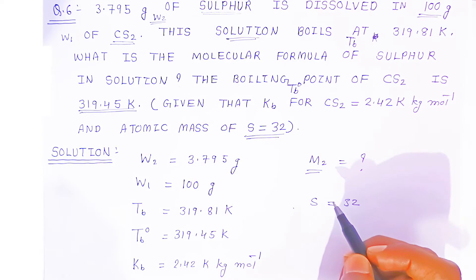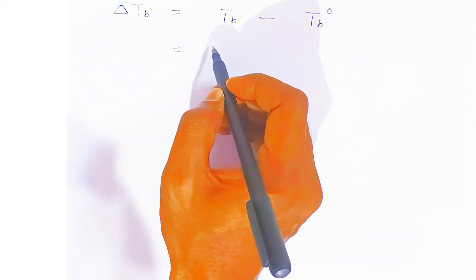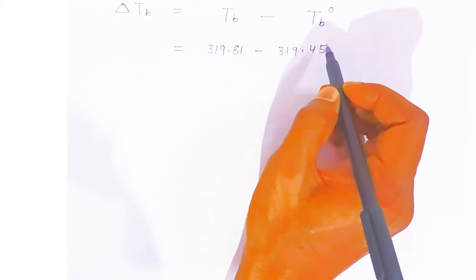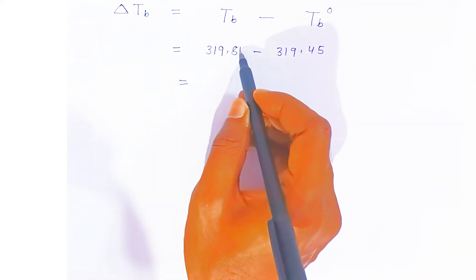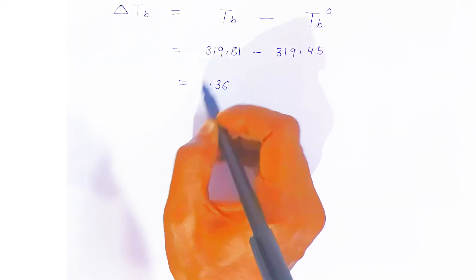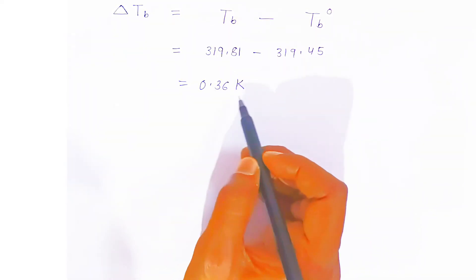To calculate the molar mass, we first need delta Tb, the elevation in boiling point. Delta Tb equals the boiling point of solution minus the boiling point of solvent: 319.81 minus 319.45, which gives us 0.36 Kelvin.